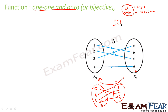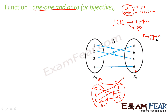One input will have only one output; one input cannot have two outputs — that is not possible. Logically, consider the example of a policeman as a function: the moment the policeman gets a thief, he will catch him; if he meets a decent person, he will let them go. It cannot be that the policeman gets a thief and sometimes catches and sometimes leaves. If that is the case, he is not a function. A function must give a single output for every input.